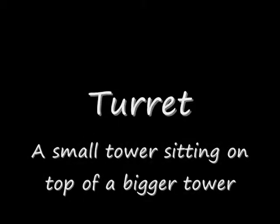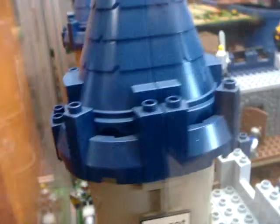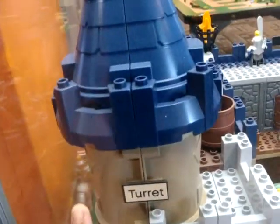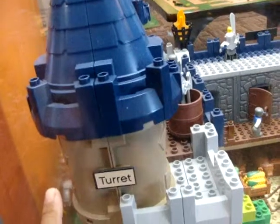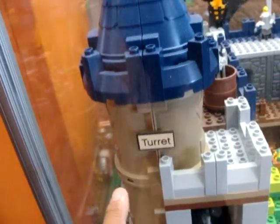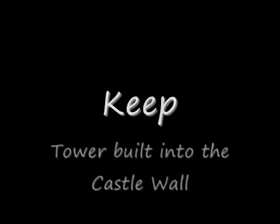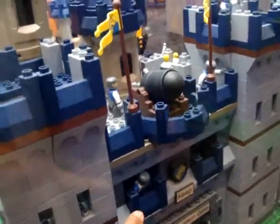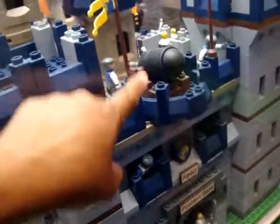Here's a portcullis. Battlement — this is good. Turret, which is a small tower built on top of a bigger tower. The keep — a tower built into the castle. Let's see if we can find the keep. Here's the keep, a tower built into the castle wall.